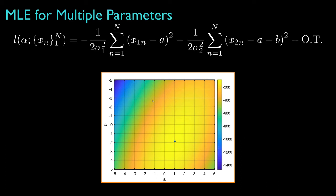Now here, for example, is a false color plot of the log likelihood for a situation when sigma1 is equal to 2, sigma2 is equal to 3, and we have 100 independent measurements of the vector x, and the true parameters are a equal 1 and b equal 2.